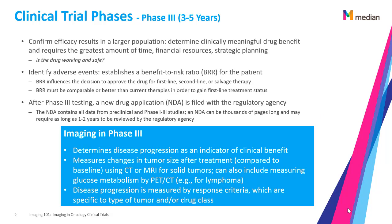Phase 3 is meant to confirm efficacy results in a larger population to determine clinically meaningful drug benefit and requires the greatest amount of time, financial resources, and strategic planning. It answers the question: is the drug working and safe? It is important to identify adverse events and establish a benefit-to-risk ratio, or BRR, for the patient. BRR influences the decision to approve the drug for first-line, second-line, or salvage therapy.